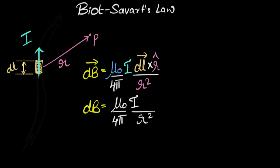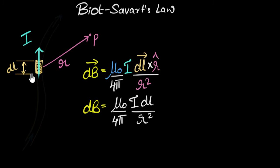The magnitude of dL × r̂ is just dL times the magnitude of r̂, times sine of the angle between them. Now, r̂ is a unit vector in the direction of r, and since it's a unit vector, its magnitude is one. The direction of dL is the direction of the current, and the direction of r̂ is the direction of r. So if I call the angle between them theta, the magnitude becomes dL × sine(θ).